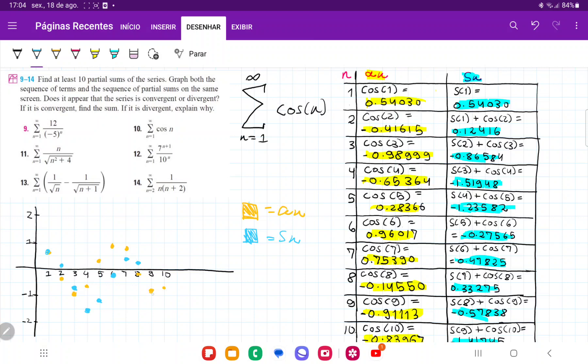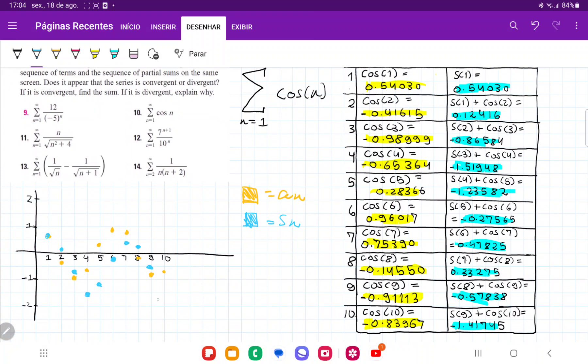And then we have 0.33. Then we have minus 0.57, so about like so. And lastly, we have minus 1.41. And so that is going to be like here.